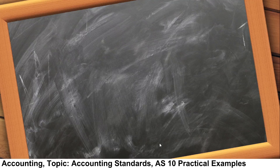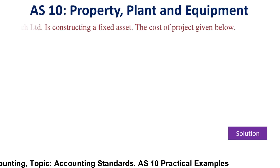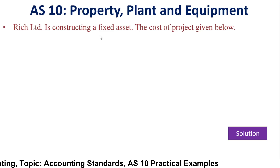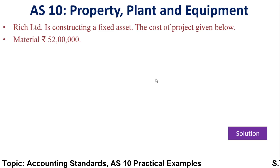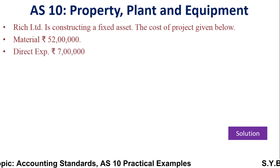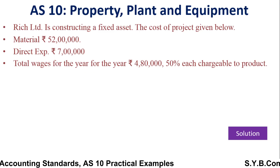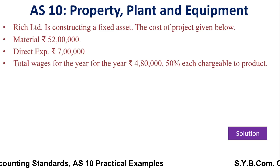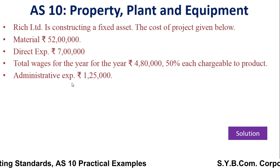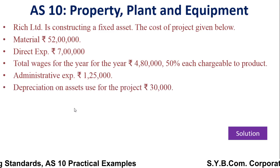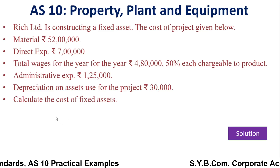Let us see Example Number 3 under PPE. Rich Limited is a constructing company constructing a fixed asset. The cost of the project is given: material rupees 52 lakh, direct expenses rupees 7 lakh, total wages for the year rupees 4 lakh 80,000 — out of which 50,000 is chargeable to this fixed asset — administrative expenses rupees 1 lakh 25,000, and depreciation on assets used for the project rupees 30,000.